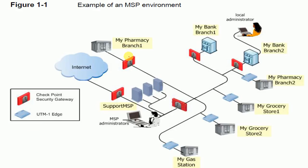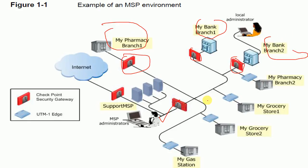In this diagram you can see a lot of firewalls — the red ones are all firewalls — and this is our administrator. There are different branches: my bank branch one, my bank branch two, and so on. So there are a lot of branches and one administrator. As I told you in my previous chapter, he has to log in to each device and push policy, which is a headache. We need a centralized management system, which is where Provider One is required.